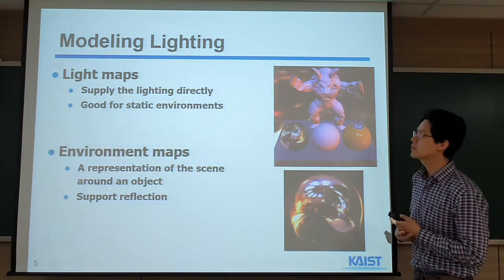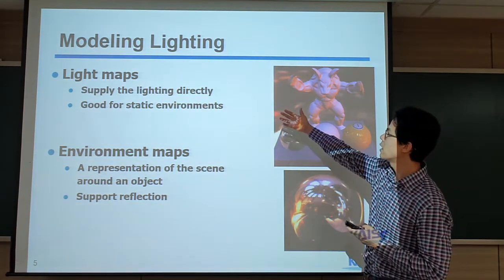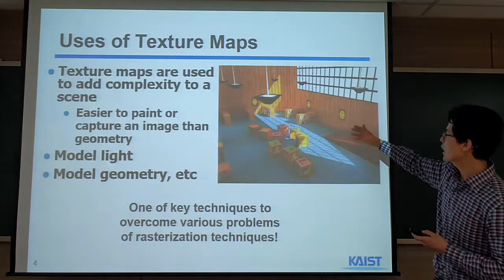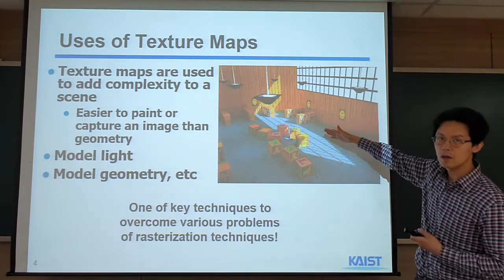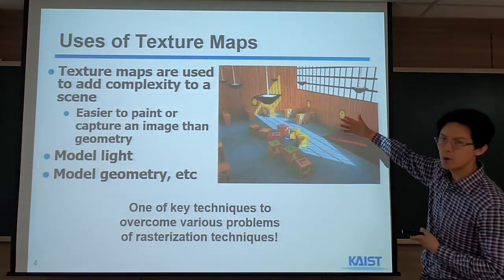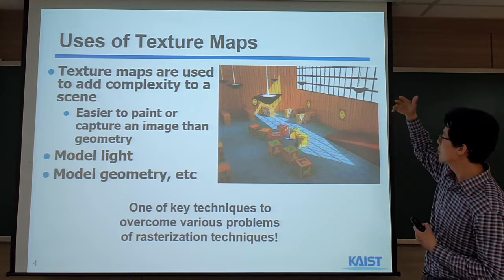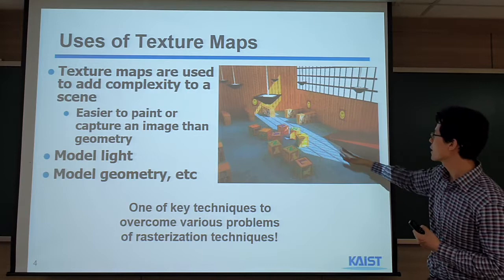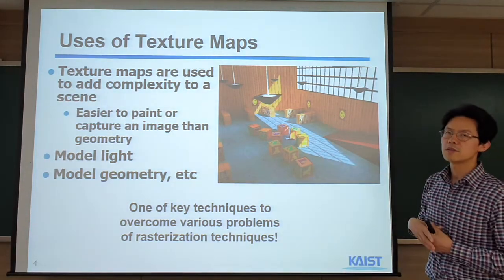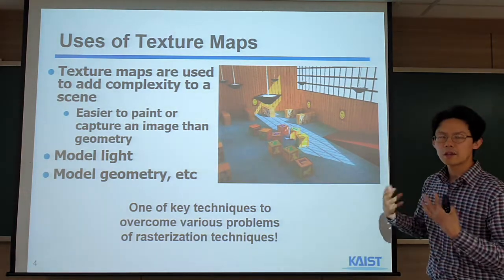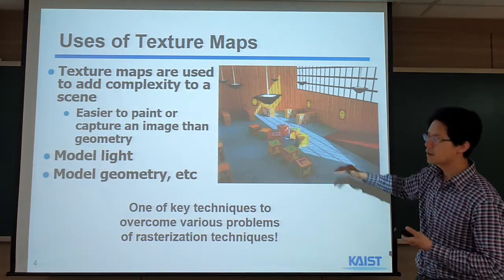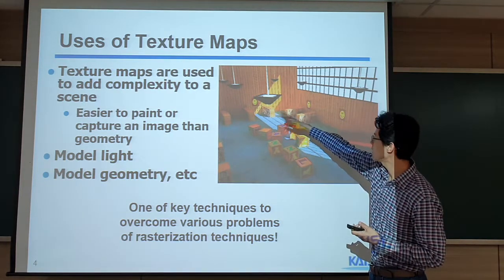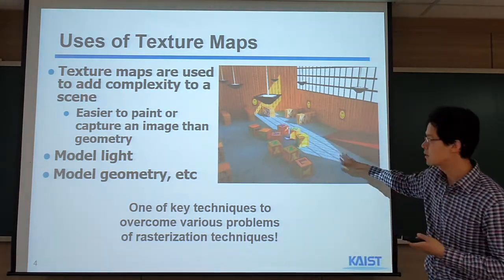One of the very common uses of texture mapping is modeling light. For example, here I grabbed this image from an old OpenGL book. You can see that we are getting light from a distance through the window. Back then it was very difficult — it takes a lot of time to render this kind of scene. So we can use texture mapping to add the kind of lighting effect details here.